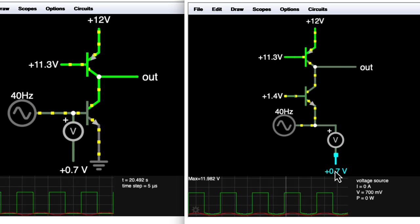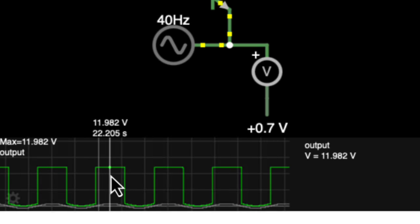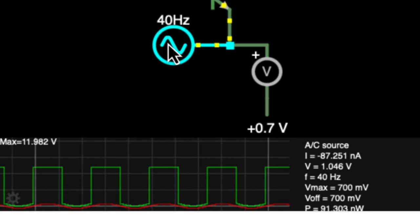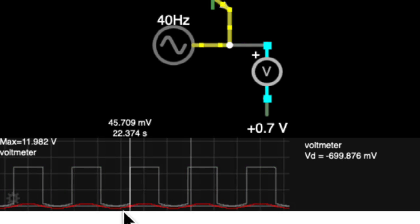The common base amplifier is a non-inverting configuration, so here when the input goes up, the output goes up, and when the input goes down, the output goes down. Now, it's interesting to note that this isn't railing out all the way at the lower end.